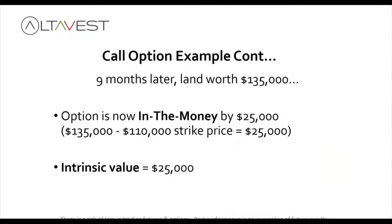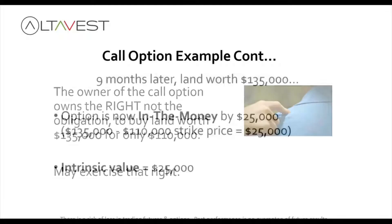What happens if nine months later that land is now worth $135,000? Well, your option is said to be in the money. It has intrinsic value of $25,000. Why? Because you own something that gives you the ability to buy this land at $110,000 even though it's worth $135,000. That is the definition of intrinsic value.